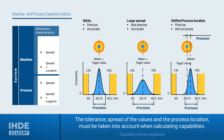USL and LSL stand for the upper and lower specification limit value of the product characteristic. A machine or process should produce parts with a sufficiently high probability that are within the permissible tolerance. In order to calculate this probability, the tolerance, the spread of the values, and the process location must be taken into account.